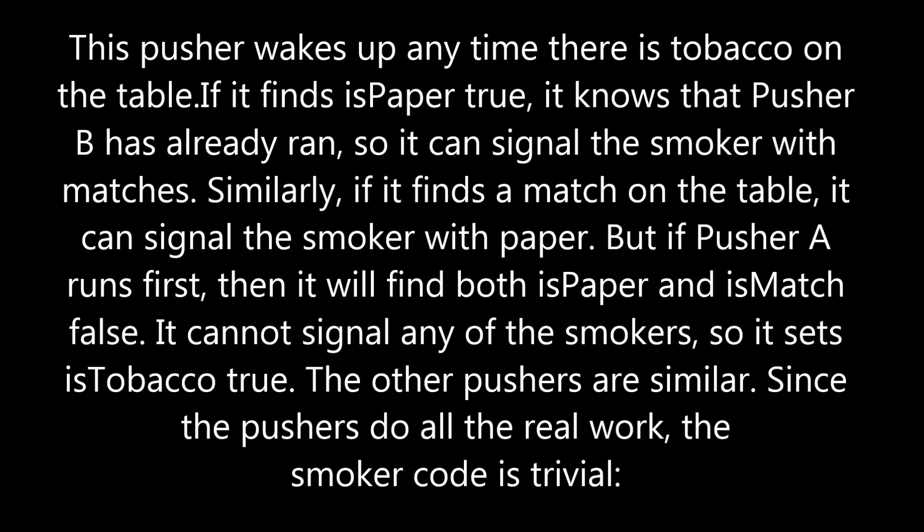Pusher A wakes up any time there is tobacco on the table. If it finds is_paper true, it knows that pusher B has already run, so it can signal the smoker with matches. Similarly, if it finds a match on the table, it can signal the smoker with paper. But if pusher A runs first, it will find both is_paper and is_match false, so it cannot signal any smoker — instead it sets is_tobacco to true. The other pushers work similarly.